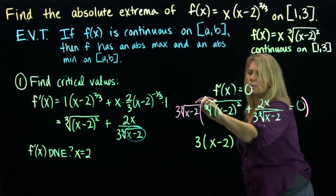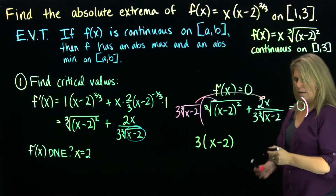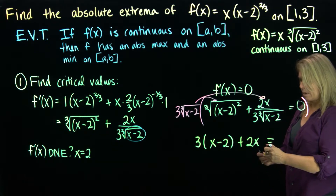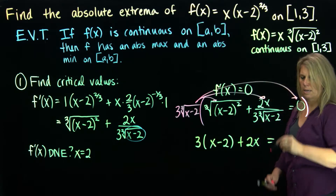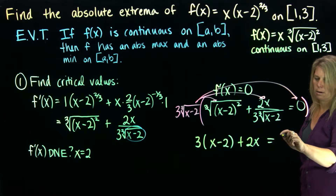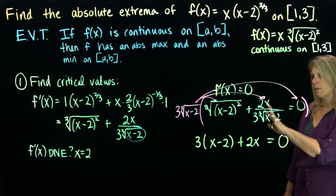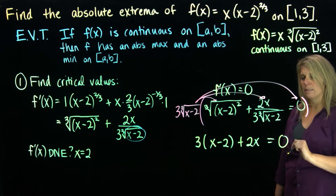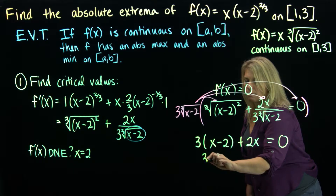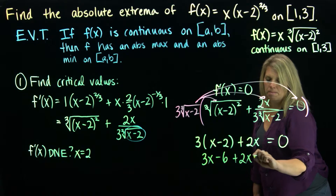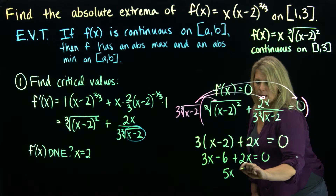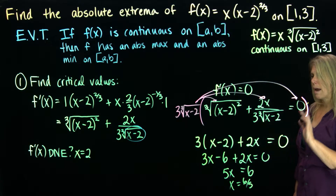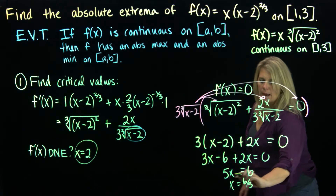What looked like a pretty awful equation actually cleans up nicely once you clear denominators. I now have a simple equation. Combining like terms, adding 6 to both sides, and dividing by 5 gives x equals 6/5. So I have two critical values: x equals 2 and x equals 6/5.